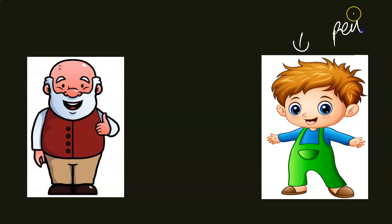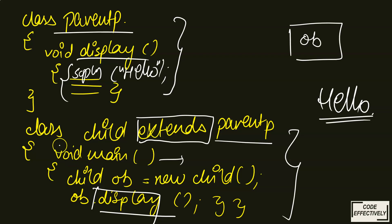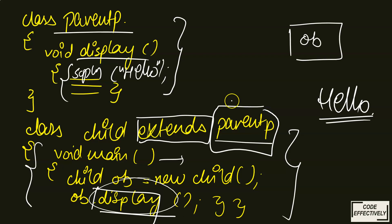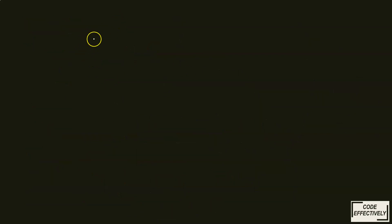Just like if you're looking for a pen, you first look in your own pencil box, and if you don't find it, you ask your parents. Similarly, the child class first looks in its own class for the method being called. If it's not available, it goes to the class it has extended and searches for that method — and if found, uses it and displays the result. This is the exact basics of inheritance.